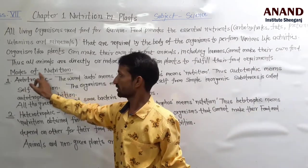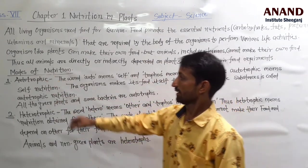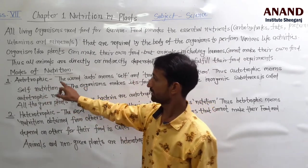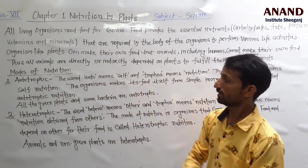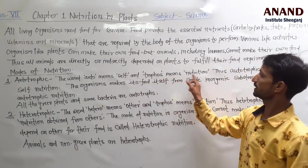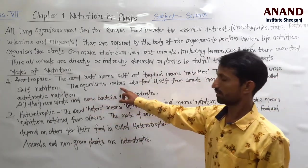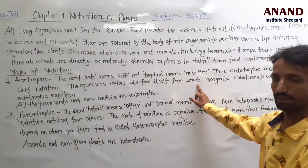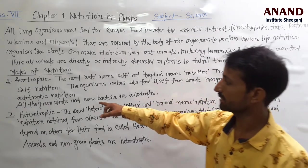Modes of Nutrition — nutrition is of some types. The first is autotrophic. The word 'auto' means self and 'tropos' means nutrition. Organisms that make their own food from simple inorganic substances follow autotrophic nutrition.